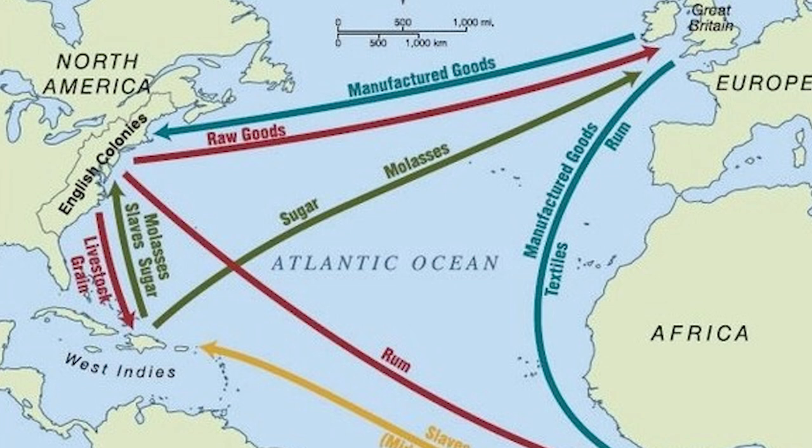The first point could begin anywhere. We're talking about Europe, West Africa, and the Americas. For example, manufactured goods would be taken from Europe — pots, pans, cloth, fabric, guns, gunpowder, bullets — taken to West Africa, where these items were exchanged for captive Africans who were then loaded on ships, taken across the Atlantic Ocean. That area is called the Middle Passage, a stretch of sea between West Africa and the Americas.